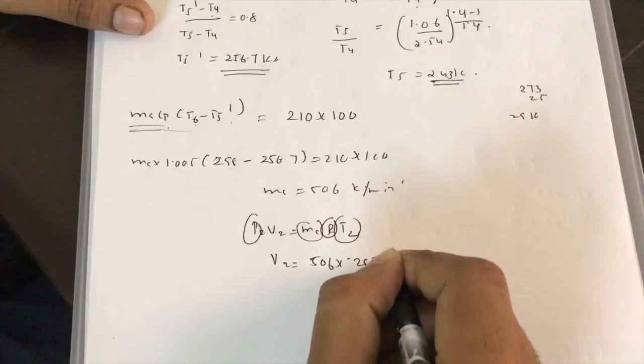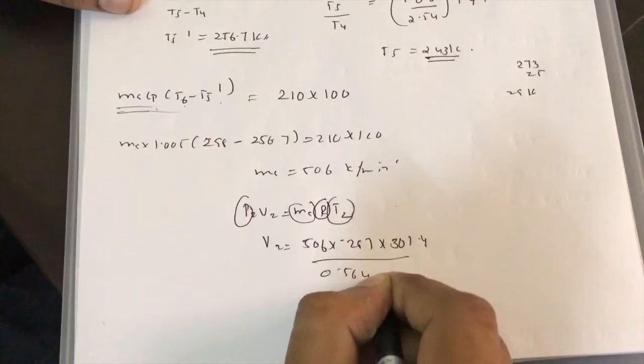V2 = MA·R·T2 / P2 = 506 × 287 × 301.4 / (0.564 × 10^5).